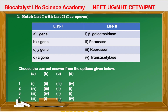Question number 1: Match list 1 with list 2. This question is on the lac operon. List 1 has genes listed. The lac I gene, which is a regulatory gene, encodes a repressor protein. The lac Z gene encodes beta-galactosidase, which converts lactose into glucose and galactose. The Y gene encodes a permease for the transport of the lactose molecule, and the A gene encodes a transacetylase enzyme.